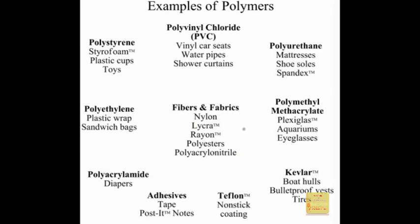Adhesives — things that make tape stick, post-it notes — are all polymer-based. Teflon is the non-stick polymer coating on pots and pans. Polymethyl methacrylate is plexiglass — used in aquarium walls and plastic eyeglasses or hard contact lenses. Fibers and fabrics like nylon, lycra, rayon, and polyester are manmade polymers that make clothing more durable, stretch-resistant, and stain-resistant. Polyacrylonitrile makes synthetic carpet fibers for durability. Kevlar is a polymer used for lightweight bulletproof vests — even stronger than steel in some cases — and used in tires and boat hulls. Organic polymer chemistry has transformed materials from heavy metal armor to lightweight, functional, protective fabrics.